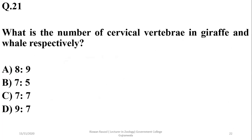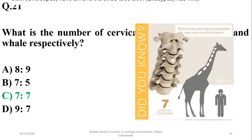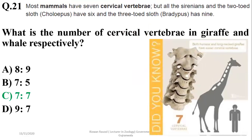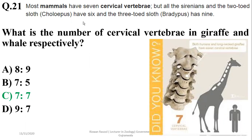Question 21: What is the number of cervical vertebrae in giraffe and whale respectively? Most mammals have 7 cervical vertebrae, so the right option is C. As shown in the picture of the giraffe, there are 7 vertebrae. Exceptions include the two-toed sloth with 6 and the three-toed sloth with 9 cervical vertebrae.